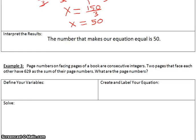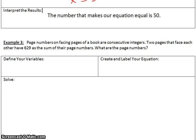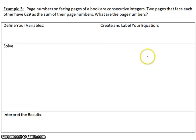We scroll down to example 3. Page numbers on facing pages of a book are consecutive integers. Two pages that face each other have 629 as the sum of their page numbers. What are the page numbers? It says define your variables. We're going to define our variables. First, our first variable would be X. X would be the first page.